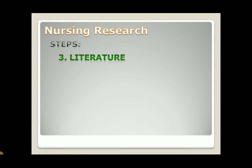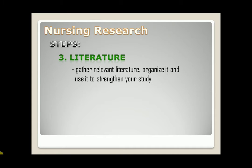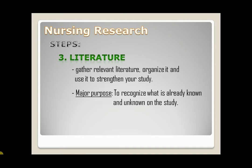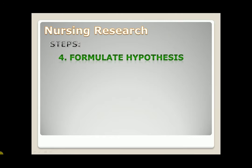Third step is literature. In this step, you should gather relevant literature, organize it, and use it to strengthen your study. The major purpose of literature is to recognize what is already known and unknown on the study. Step number four: formulate hypothesis. It predicts the relationship between two or more variables.